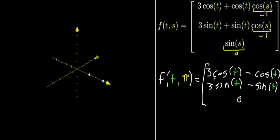And this whole thing actually simplifies. Three cosine t minus cosine t, that's just two cosine t. And then same deal for the other one, it's gonna be two sine of t.